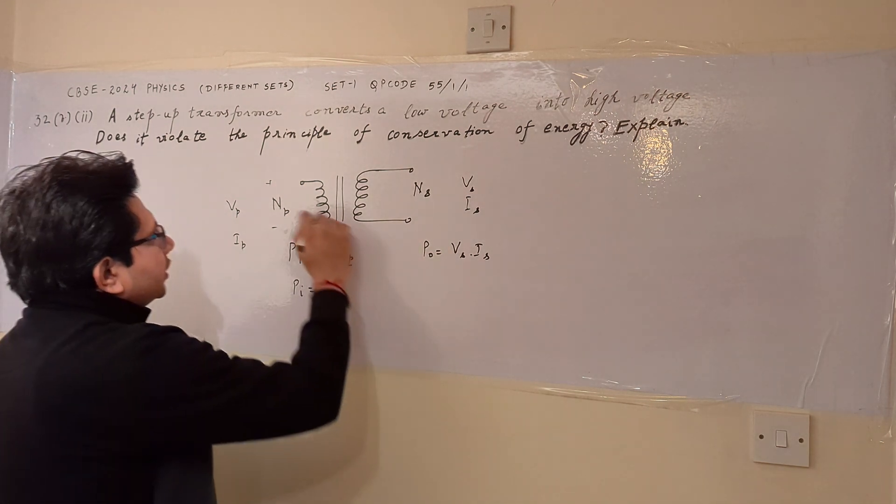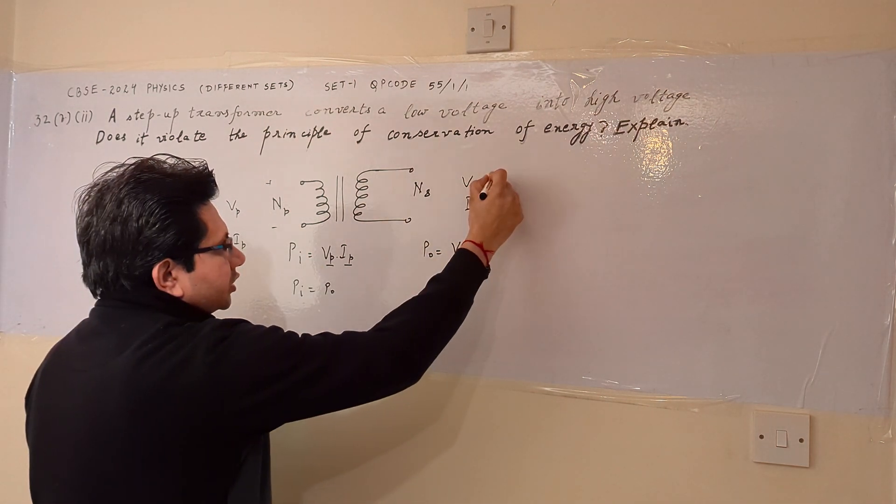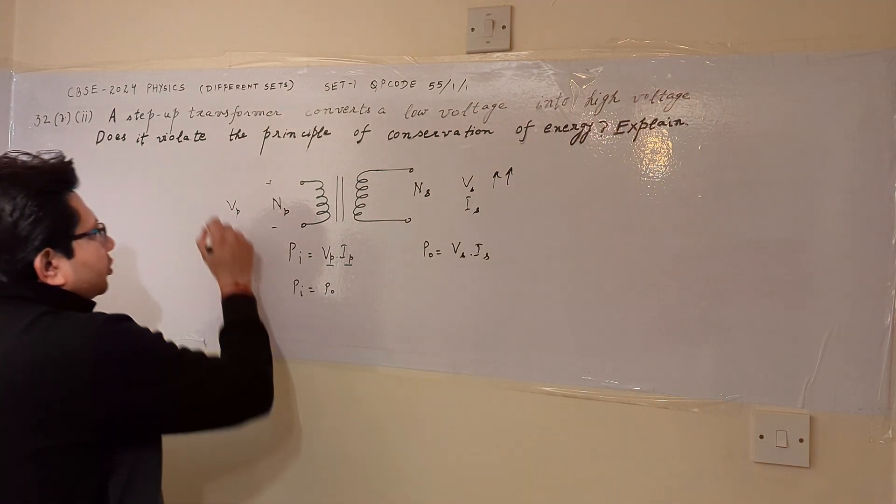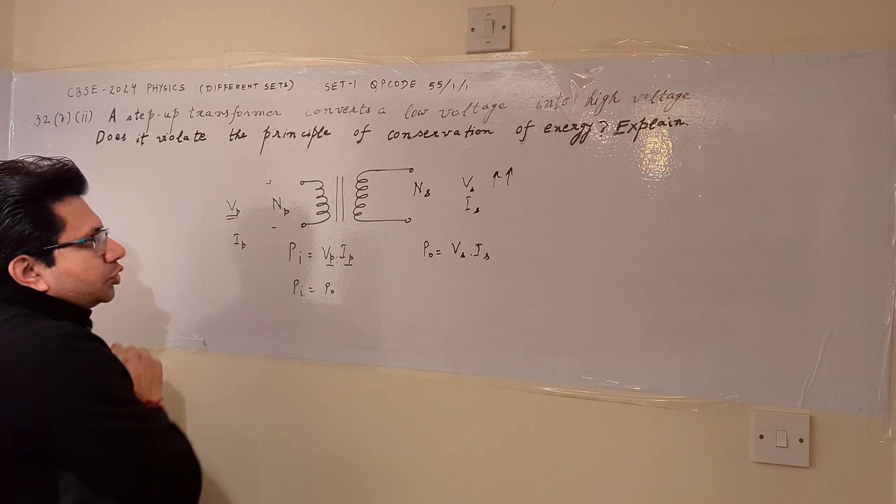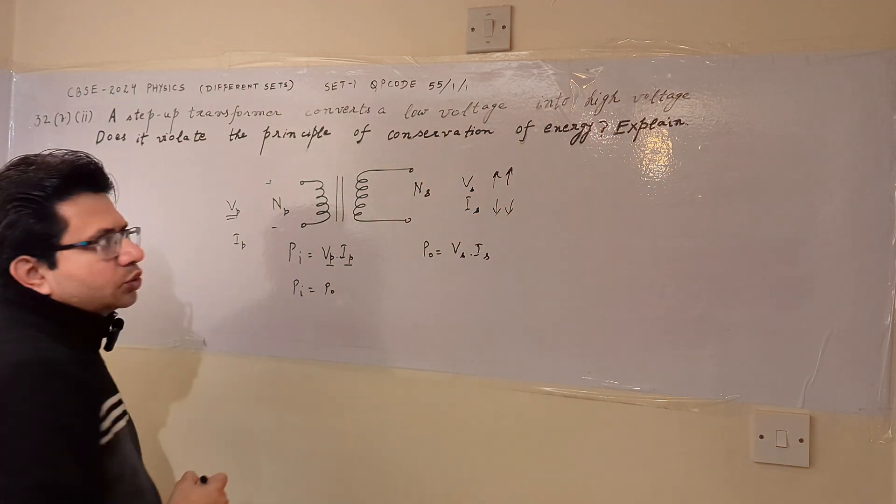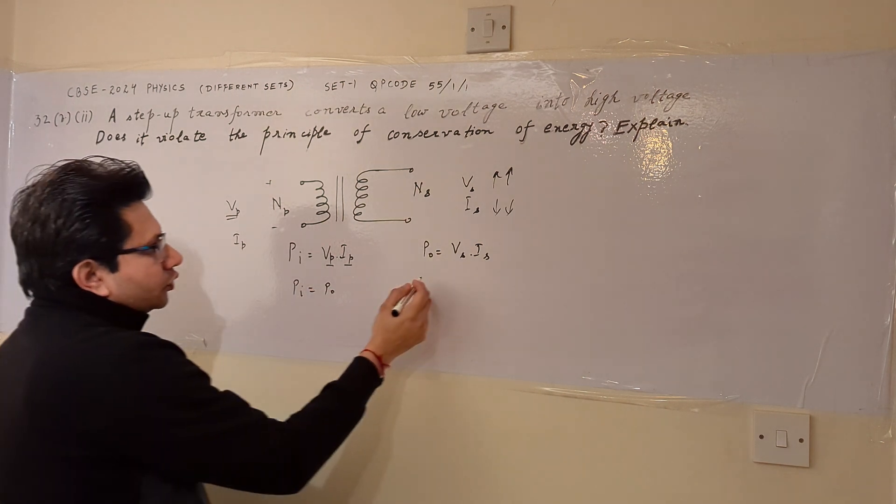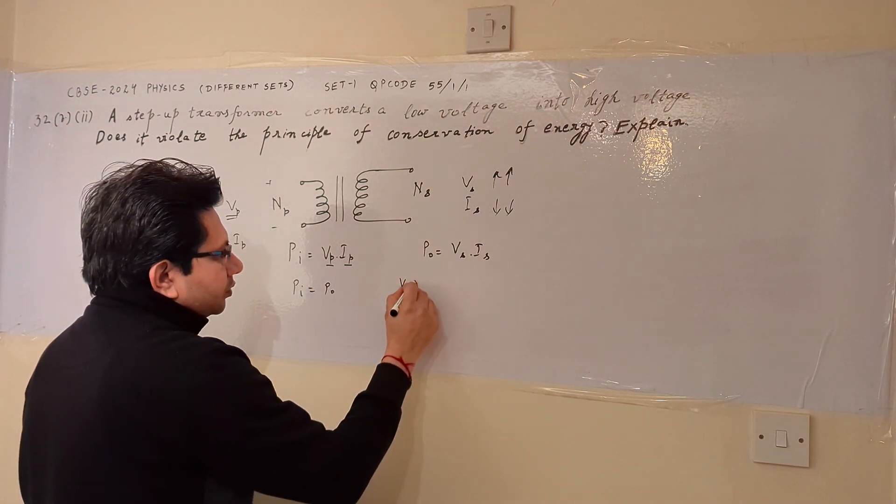So it means that if the voltage is step up, for example, at the output side, the voltage is step up as compared to the input voltage, then correspondingly the IS go down. The secondary current goes down. It means that the product of the voltage and current remains constant.